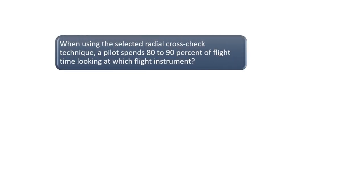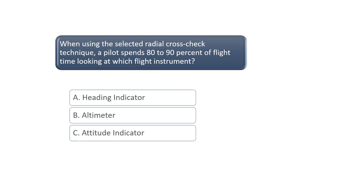When using the selected radial crosscheck technique, a pilot spends 80-90% of flight time looking at which flight instrument? According to the Instrument Flying Handbook, when using the selected radial crosscheck technique, a pilot should spend 80-90% of flight time looking at the attitude indicator while only taking quick glances at the other flight instruments.